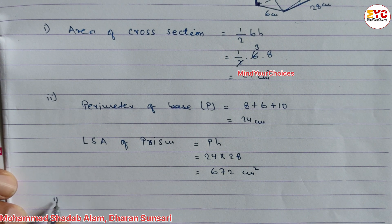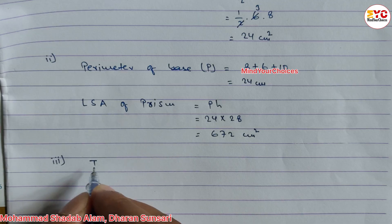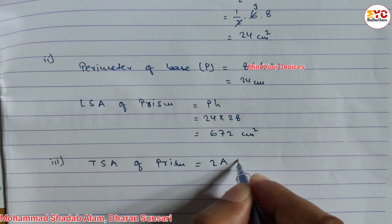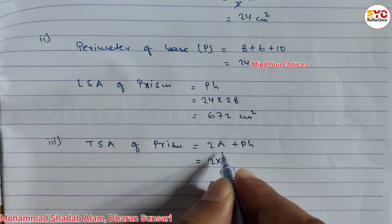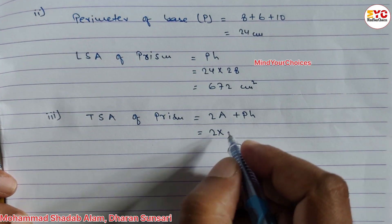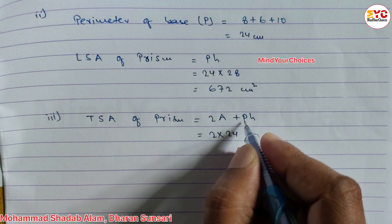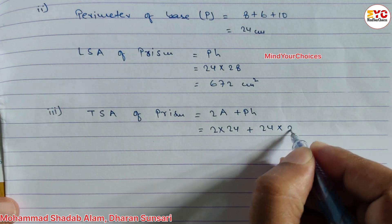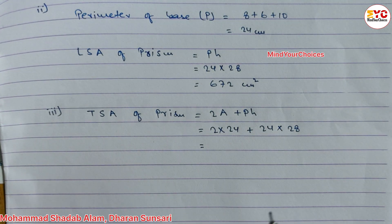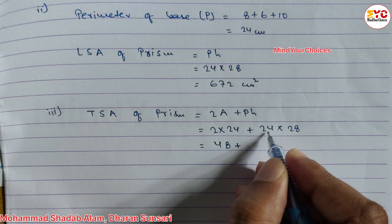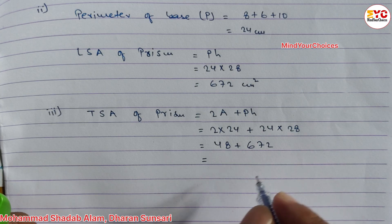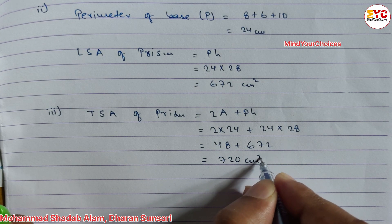After this, in number 3, we have to find out the total surface area — TSA of prism. The formula for TSA of prism is 2A plus PH. So 2 into A — A means area of cross-section, which is 24 — plus P, perimeter of base which is 24, into height which is 28. So 2 × 24 = 48, plus 24 × 28 = 672. Add these two and we get 720 cm square.